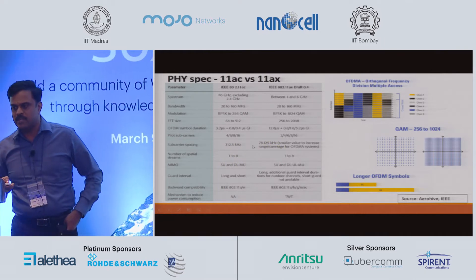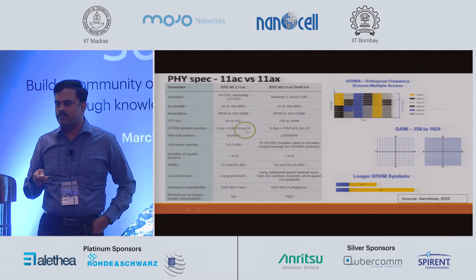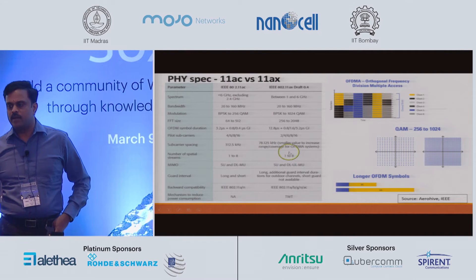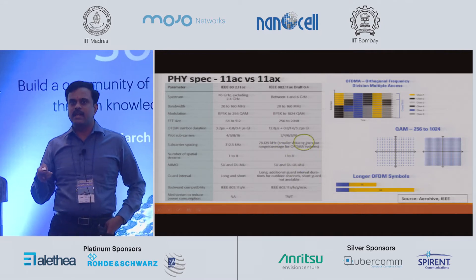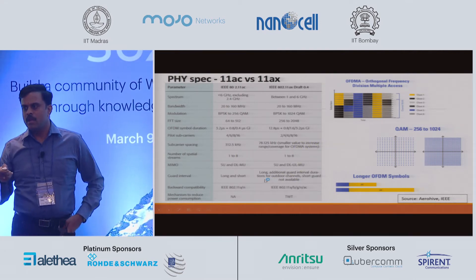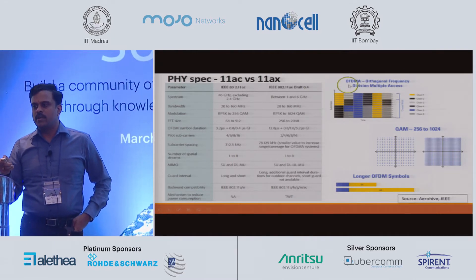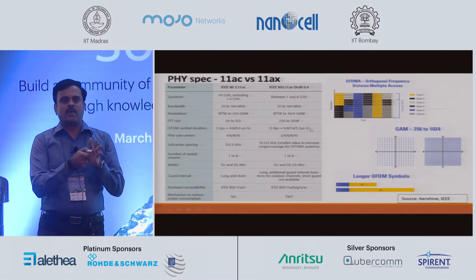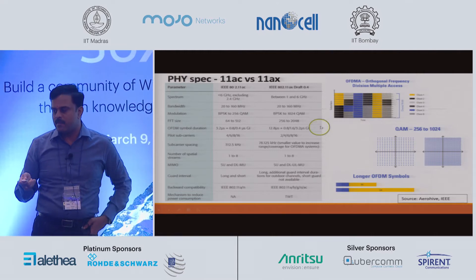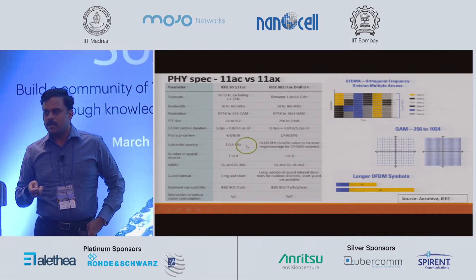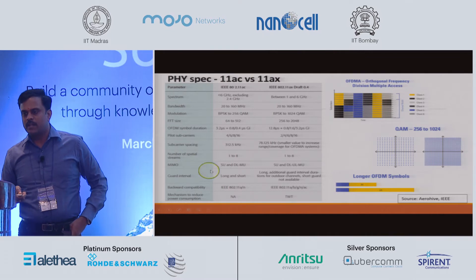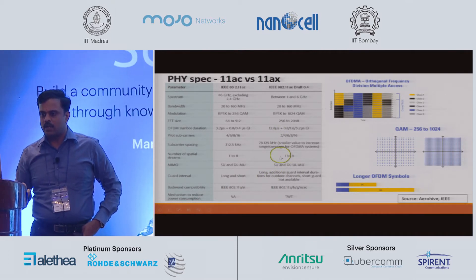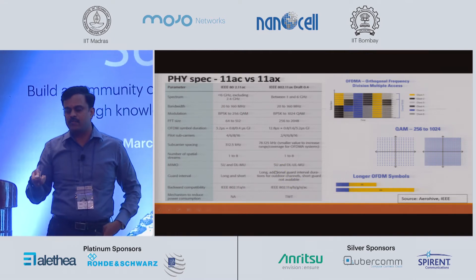Subcarrier spacing is another important thing. The increased OFDM symbol duration occurs because subcarrier spacing has been reduced from 312.5 kHz to 78 kHz in OFDMA, and this is to increase range and coverage. OFDMA is orthogonal OFDM with multiple access: MU-MIMO talks about users being spatially multiplexed, while OFDMA talks about users being frequency multiplexed, and the number of spatial stream support doesn't change. Another new thing in 11AX is both downlink and uplink MU-MIMO for beamforming, and the short guard interval is removed to address implementation challenges.